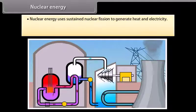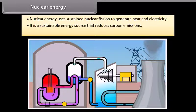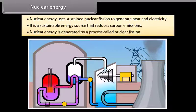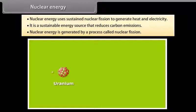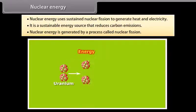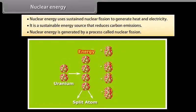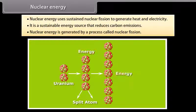Nuclear energy. Nuclear energy uses sustained nuclear fission to generate heat and electricity. It is a sustainable energy source that reduces carbon emissions. Nuclear energy is generated by a process called nuclear fission. In this process, the nucleus of heavy uranium, plutonium, or thorium is bombarded with low energy neutrons. This atom is then split into lighter nuclei. A tremendous amount of energy is released. For example, the fission of an atom of uranium produces 10 million times the energy produced by the combustion of an atom of carbon from coal.